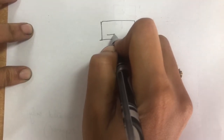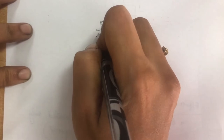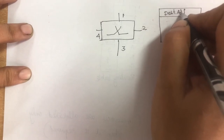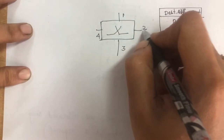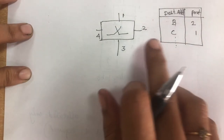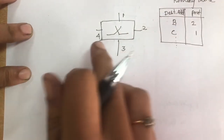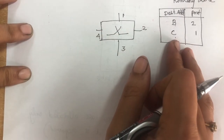Now we will see the routing table of the datagram approach. Every switch will maintain a routing table. The routing table contains two pieces of information: the destination address and the port. For example, destination B is connected to port 2, and destination C is connected to port 1. Every switch maintains this routing table, and when a packet needs to be transmitted, the switch searches the routing table and routes the packet accordingly.